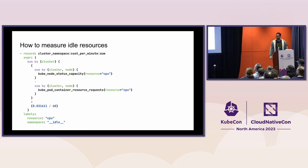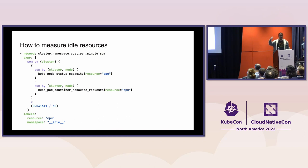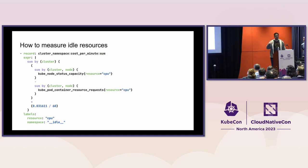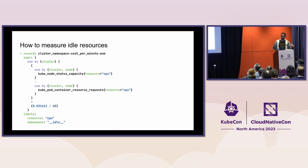Let's look at idle cost in a recording rule. We have cluster_namespace_cost_per_minute_sum with the idle query. Notice that we don't sum by namespace anywhere in the query — idle resources aren't associated with a namespace, they're associated with a node. We add an extra label called namespace=__idle__ and call that a virtual namespace. What we do is associate all the spend on unused resources into a single namespace.